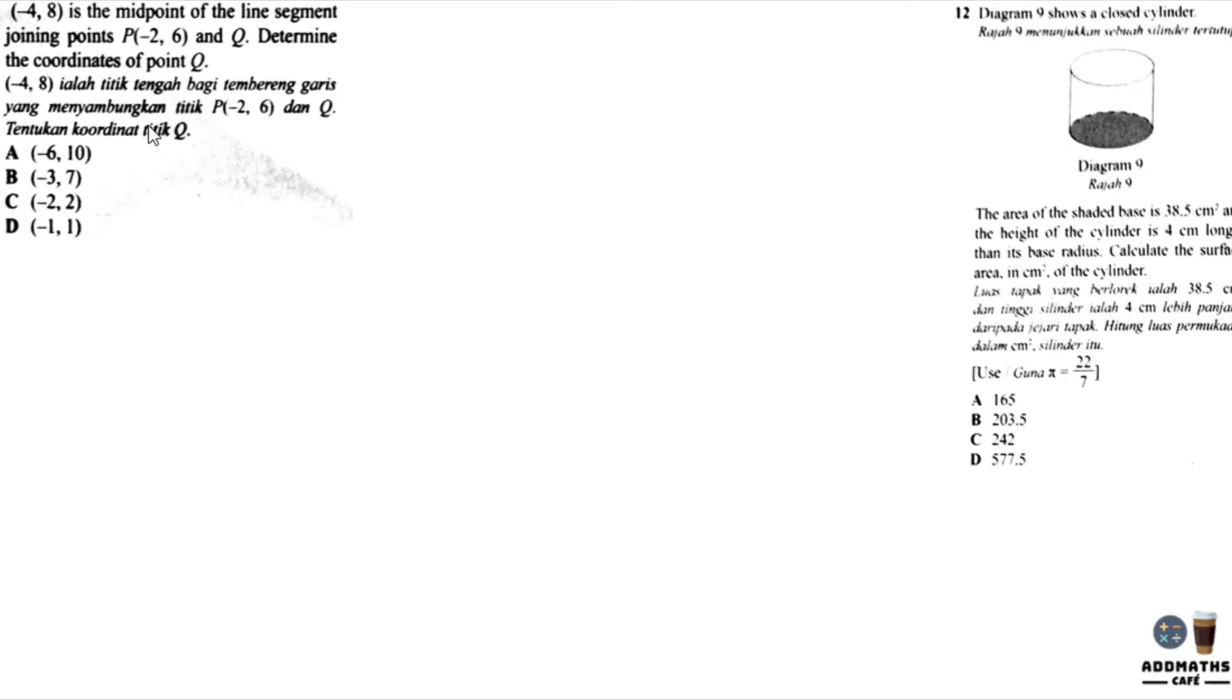Let's look at question 11. Question 11 says that this coordinate negative 4, 8 is the midpoint of the line segment joining P and Q.